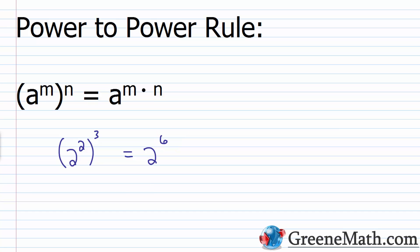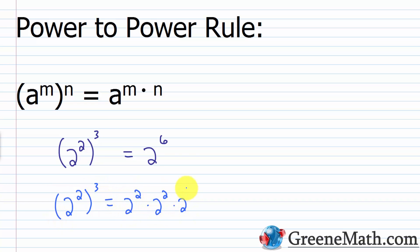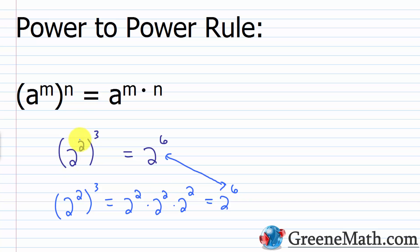We can prove this using the product rule. If we cube something, it means we have three of them, so two squared cubed is two squared times two squared times two squared. Using the product rule, keep the base the same and add the exponents: two plus two plus two equals six. So we get two to the sixth power either way — the power-to-power rule is really just a shortcut to get the answer more quickly.